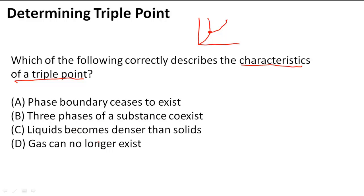or gas can no longer exist? The correct answer to this is that the three phases of a substance coexist. So gas, liquid, and solid can coexist at this point where the temperature is a certain temperature and the pressure is a certain pressure. So at that triple point, all three phases can coexist in equilibrium.